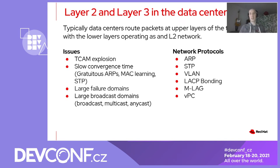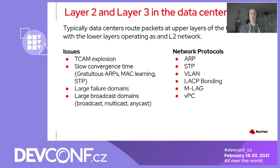Typically, the Layer 3 smarts of a data centre would be in the upper layers of the topology in the big core routing infrastructure, and the lower layers of the data centre network topology would have been more Layer 2 focused. For Layer 2 networks, the way MAC addresses and IP addresses are discovered within the network is through broadcast technology — things like ARP and MAC learning. Other Layer 2 networking technology is also used in this type of data centre, such as spanning tree protocol to ensure there are no loops in the networks.